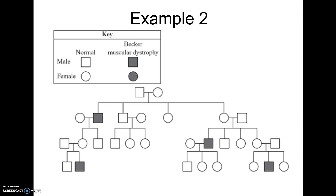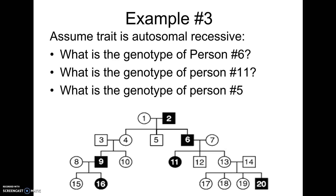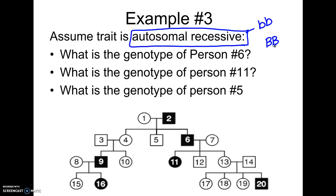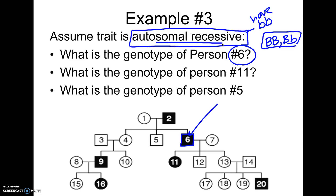Let me show you an easy one first. This is the easier kind because they tell you the trait is autosomal recessive. That means people who have the trait are bb, and people who don't have the trait would be BB or Bb. The first question they ask: what is the genotype of person six? Here's person six — it's a male, and they are colored in. If the trait is autosomal recessive, then colored-in people have the trait, so he would have to be bb, as would persons 11, 9, and 2.